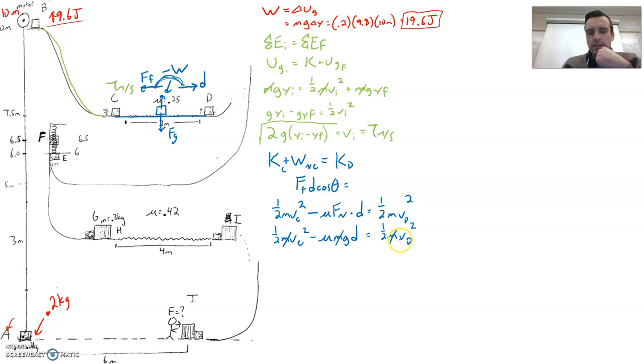Of course, what we're interested in is the velocity at point D. So we're going to have one-half of VC squared minus mu GD, and then we're going to have to multiply both sides by two and take the square root of that to get the velocity at point D. Our velocity at point C was seven. So I'm going to do two times half of seven squared minus 0.25 times 9.8 times two. And that's a beautiful thing when a plan comes together. The answer is 6.26 meters per second.